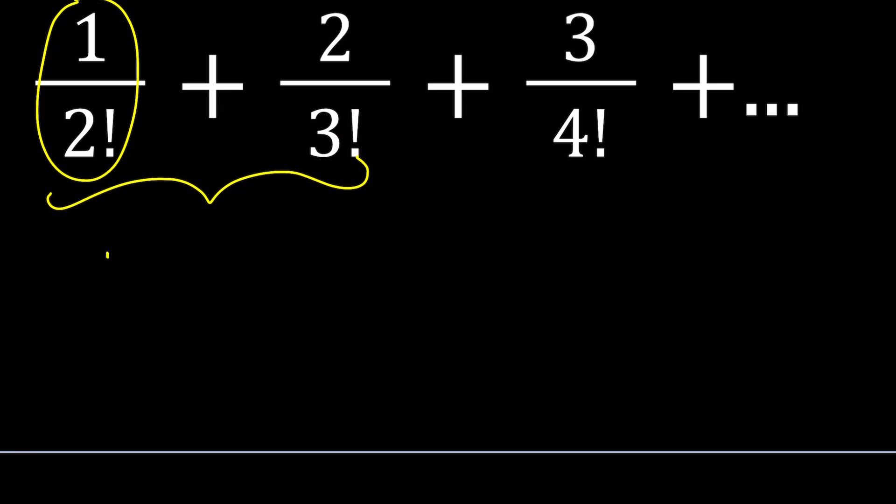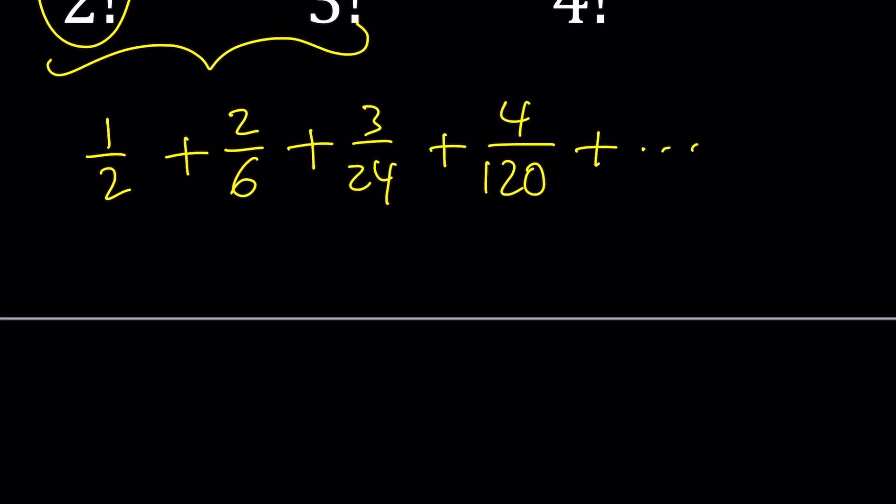For example, 2 factorial is 2 so this becomes 1 half. 2 over 3 factorial is 2 over 6. 4 factorial is 24, and 5 factorial is 120, so that's 4 over 120. If you simplify these fractions and look at the sums, this would be 1 half, this would be 1 third, this would be 1 eighth, and this would be 1 over 30.